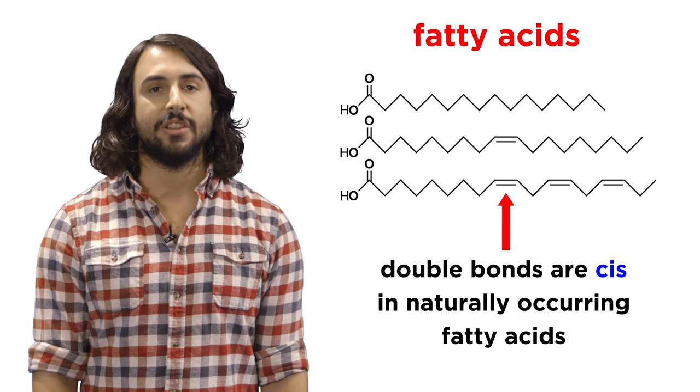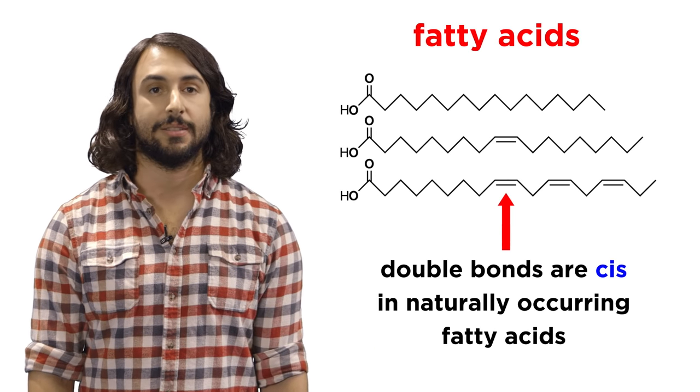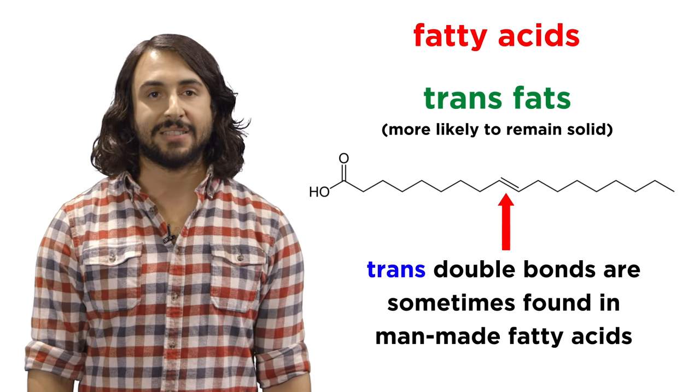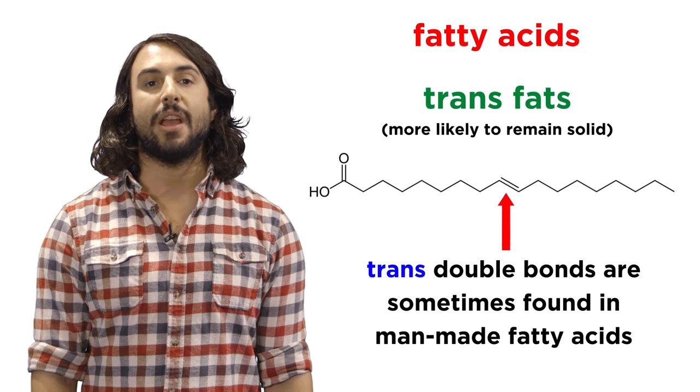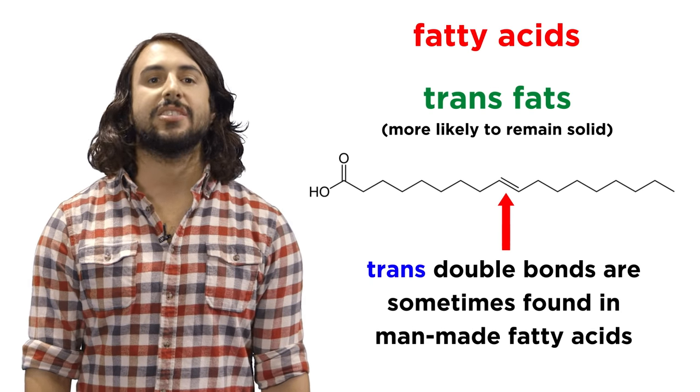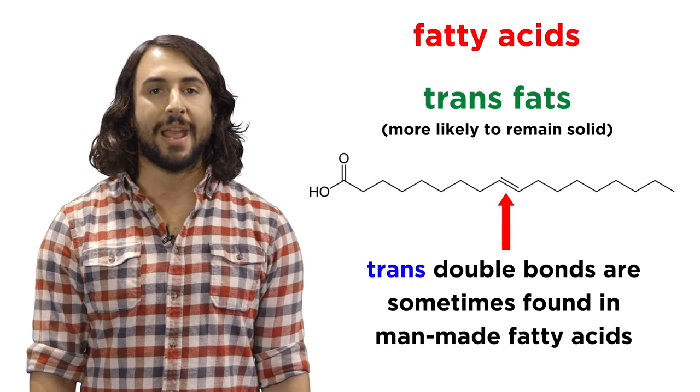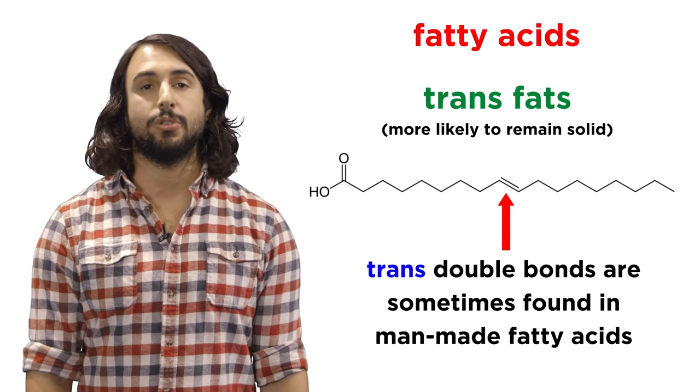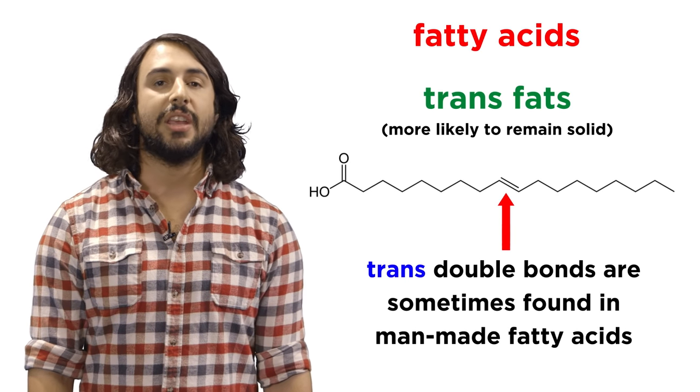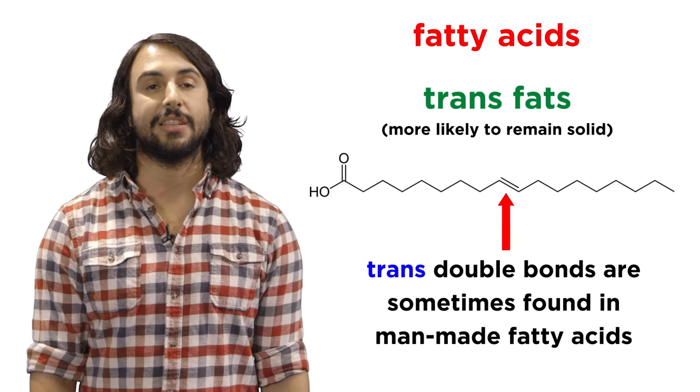In naturally occurring fats the double bonds are almost always cis. When we hear about trans fats these are the ones that seem to be harmful to the human body, as their linear shape gives them a higher melting point so they are more likely to remain solid and more difficult to metabolize. These are associated with cardiovascular disease.